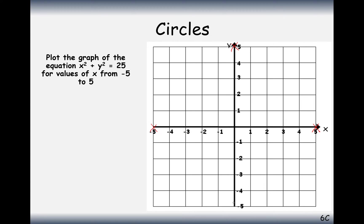And the negatives will work as well. From a bit of Pythagoras' theorem, 3 squared plus 4 squared also equals 25. So 4, 3 and 3, 4 will also be on this circle. As will 3, minus 4, because negatives get squared to make positives. And minus 3, minus 4, minus 4, minus 3, minus 4, 3, and minus 3, 4 will also be on the equation of this circle.